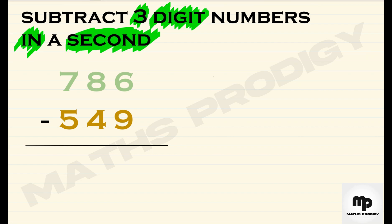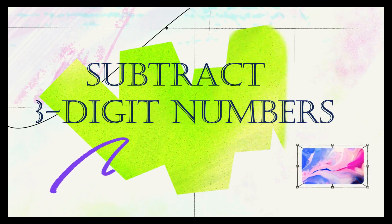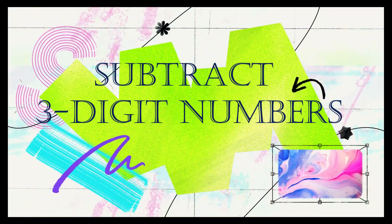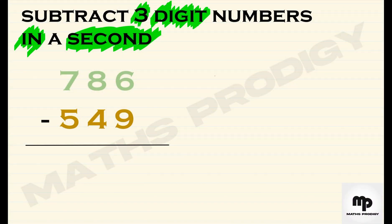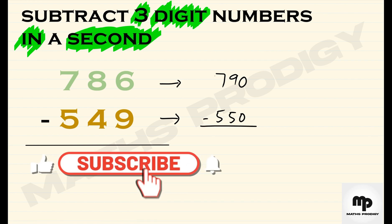So let's start the video. If you have to subtract 786 minus 549 mentally, you will take a near number of 786 which is 790, and for 549 I will think as 550. I will minus them, there will be 240.